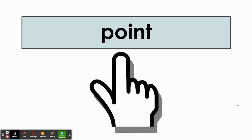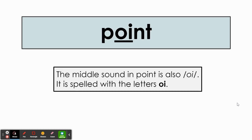This is the word point. P-o-y-nt. Point. The middle sound in point is also o-y. It is spelled with the letters o-i.